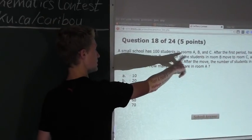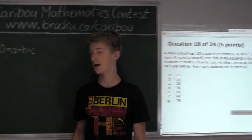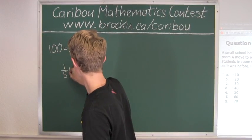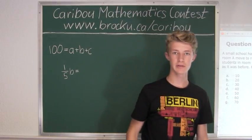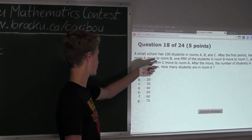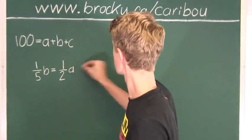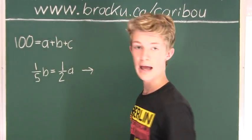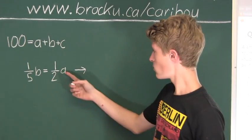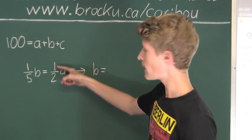Now let's look at room B. We know that a fifth of the students in room B are leaving, so that is (1/5)B. This must equal the number of students coming in, which is half the students in room A, so that is (1/2)A. Since we want B in terms of A, we multiply both sides by 5, giving us B = (5/2)A.